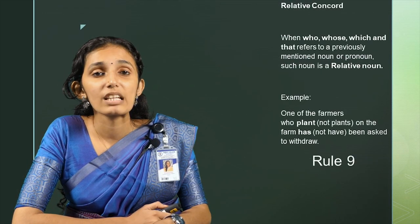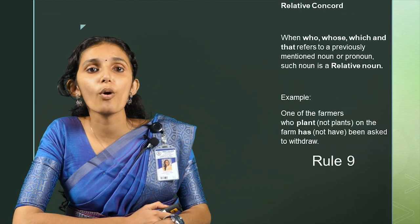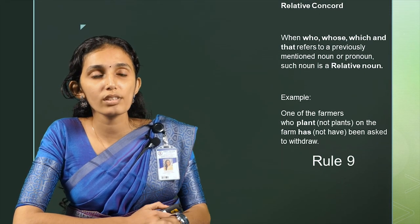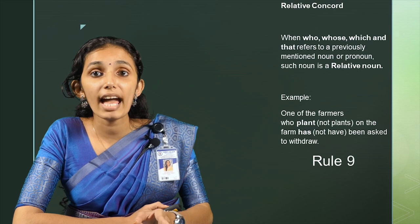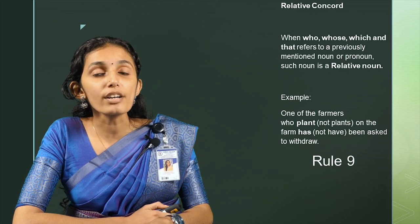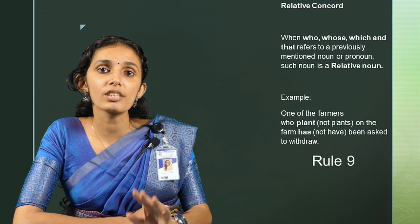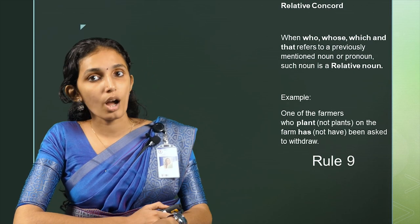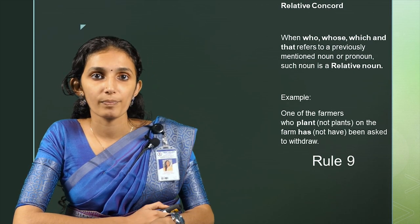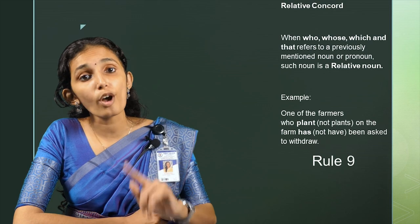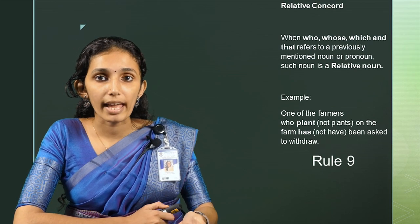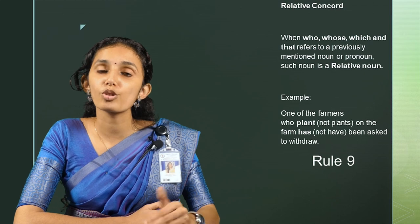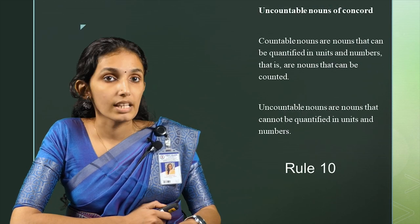Rule number 9: Relative concord. When who, whose, which, and that refer to a previously mentioned noun or pronoun, such noun is a relative noun. For example, 'One of the farmers who plant on the farm has been asked to withdraw.'